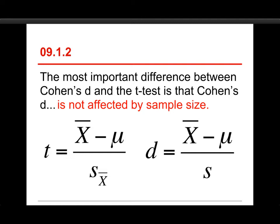On the other hand, on the right side with d, the denominator is just S, the standard deviation, and it doesn't change according to sample size. So Cohen's d, not affected by sample size, which is good for a generalized measure of effect size. On the other hand, for the t-test, where it is affected by sample size, that's good for an inferential test. So they each have their own purposes.